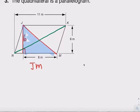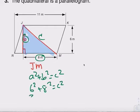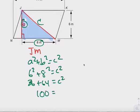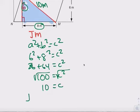J to M is 8, 6, and this is C. We're trying to find J-M, which is C. A squared plus B squared equals C squared. So 6 squared plus 8 squared equals C squared. 36 plus 64 equals C squared. So you get 100 equals C squared. Take the square root — 10 equals C. So this one is 10 meters. The distance of J-M is 10 meters.